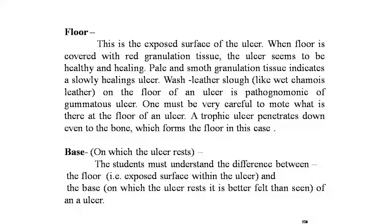The floor is the exposed surface of the ulcer. Red granulation tissue on the floor indicates a healthy or healing ulcer; pale and smooth granulation tissue indicates a slowly healing ulcer. A washed-leather slough-like floor is pathognomonic of gummatous ulcer. A trophic ulcer penetrates down even to the bone, which forms the floor. A black mass on the floor suggests malignant melanoma. Students must understand the difference between the floor (the exposed surface within the ulcer) and the base (on which the ulcer rests, better felt than seen).